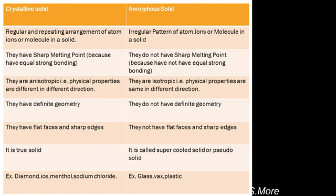Crystalline solids have flat faces and sharp edges, but amorphous solids do not have flat faces and sharp edges. Crystalline solids are true solids, but amorphous solids are called supercooled solids. Diamond, ice, methanol, sodium chloride, and sugar are examples of crystalline solids.